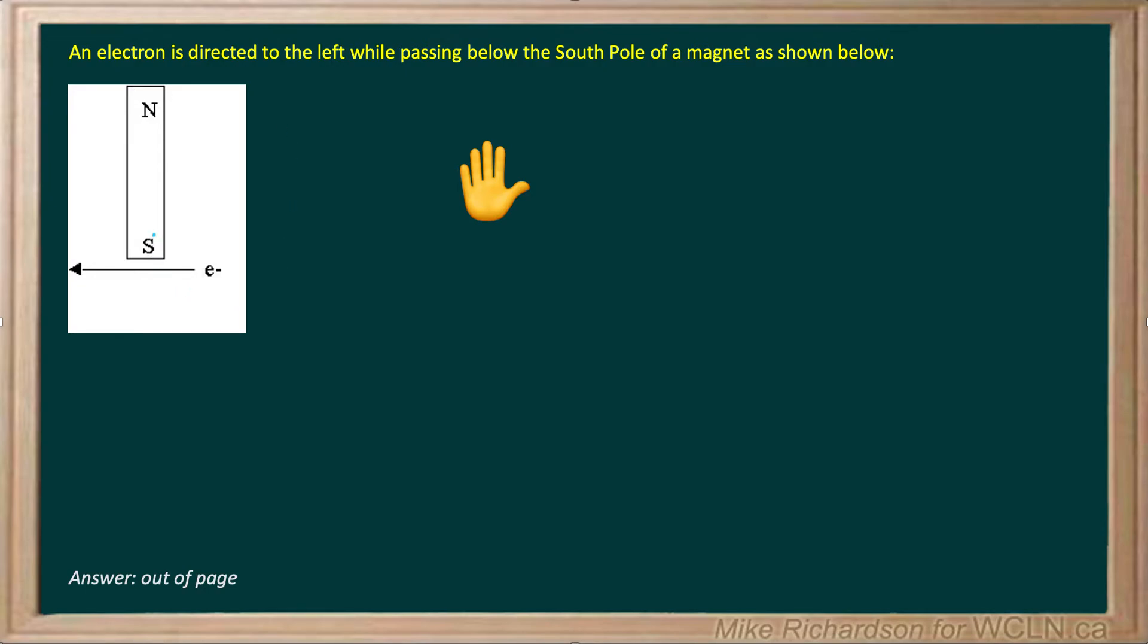Now we know field lines always go away from north and towards south. So if I drew sort of one field line, it would be straight away from north. Another one would be straight towards south, and then of course you've got these ones that wrap all the way around. The point is, on the side of the magnet where the electron is, my field lines are up, so B field is up.